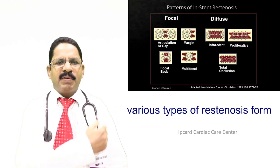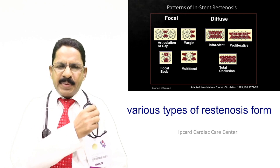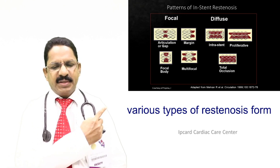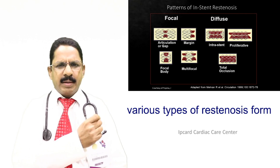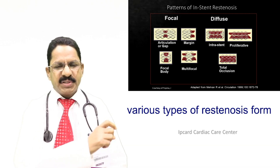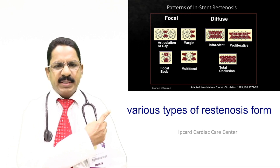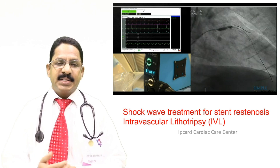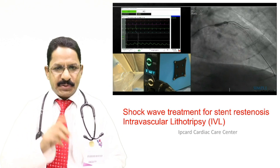Stent restenosis can form in different patterns — sometimes in the middle of the stent, sometimes at both edges, and sometimes diffusely with a layer forming all over the stent. It is important to understand that once a stent is implanted, it cannot be removed; putting in a new stent in the same place is not the correct assumption.